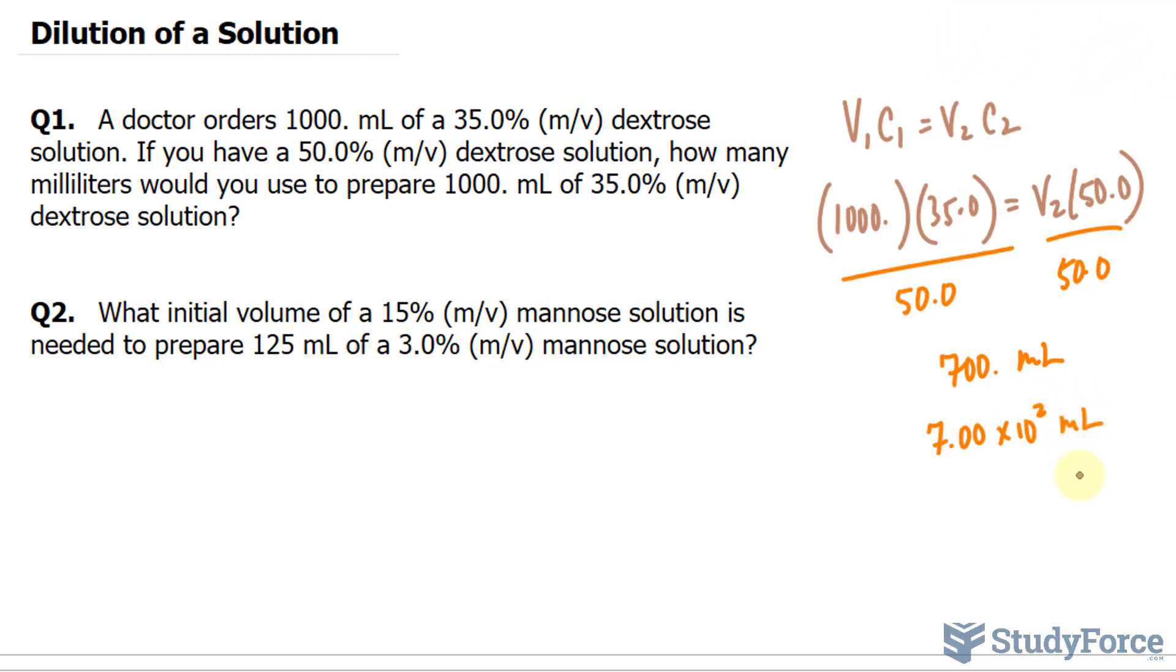In question two, what initial volume of a 15% concentration mannose solution is needed to prepare 125 milliliters of a 3%?